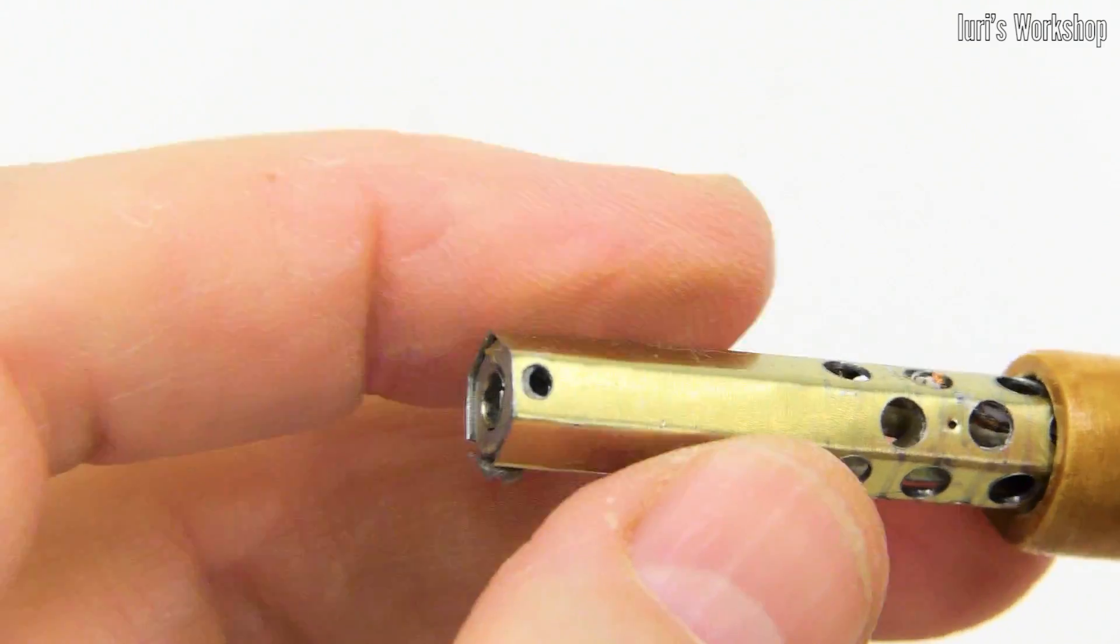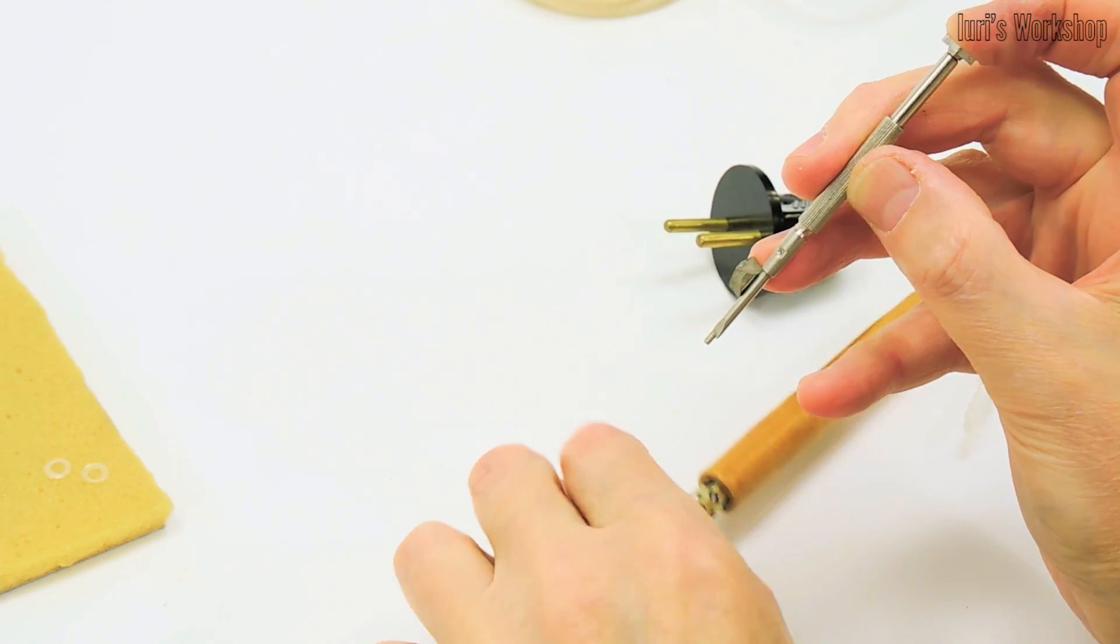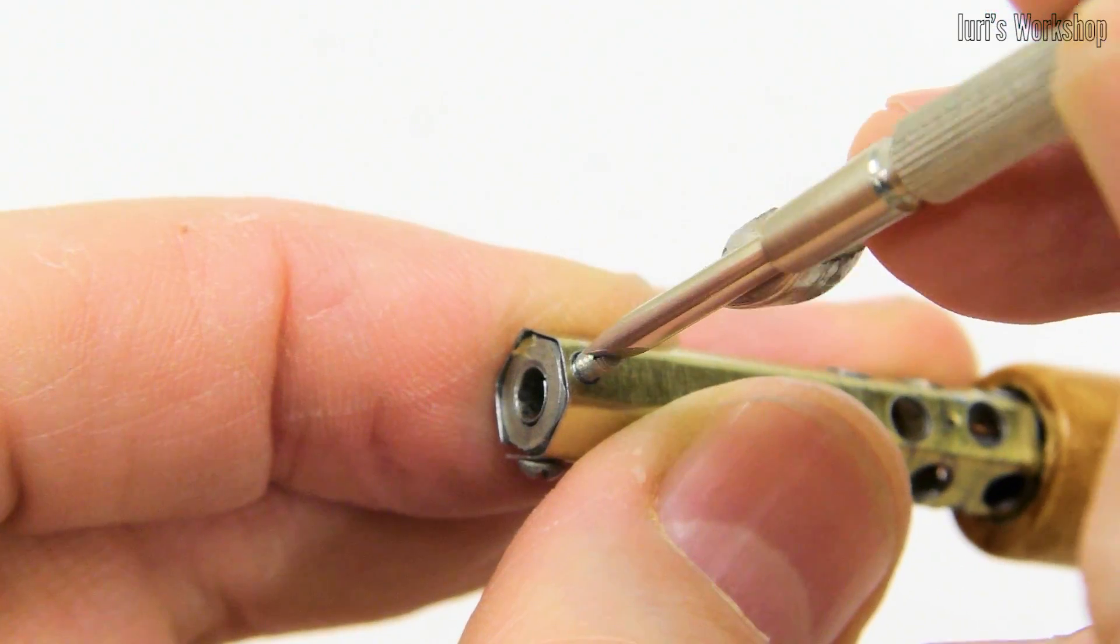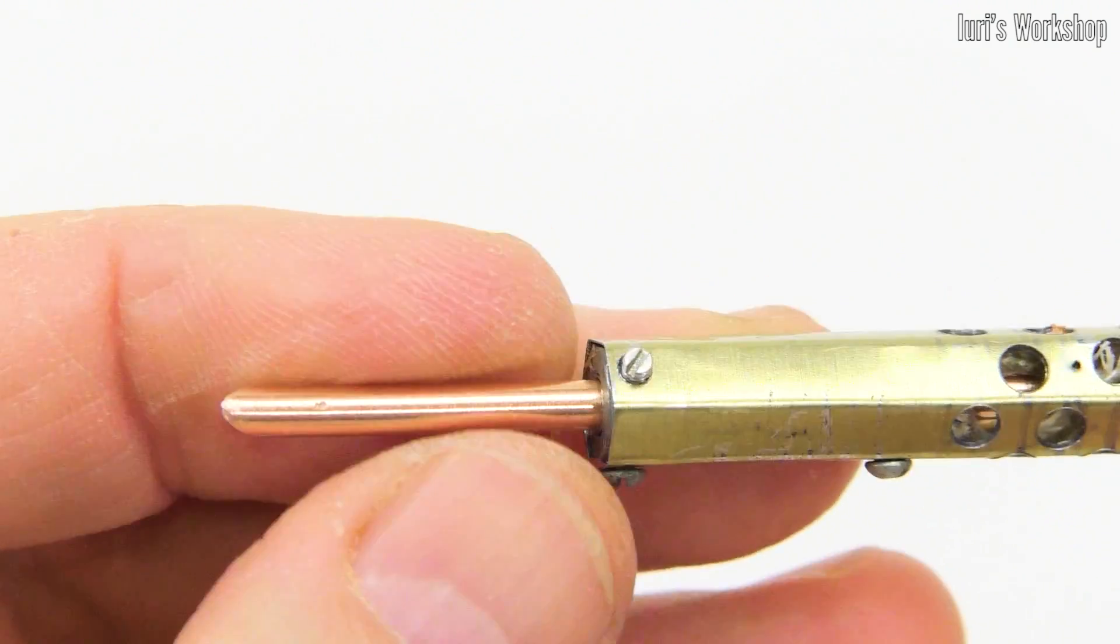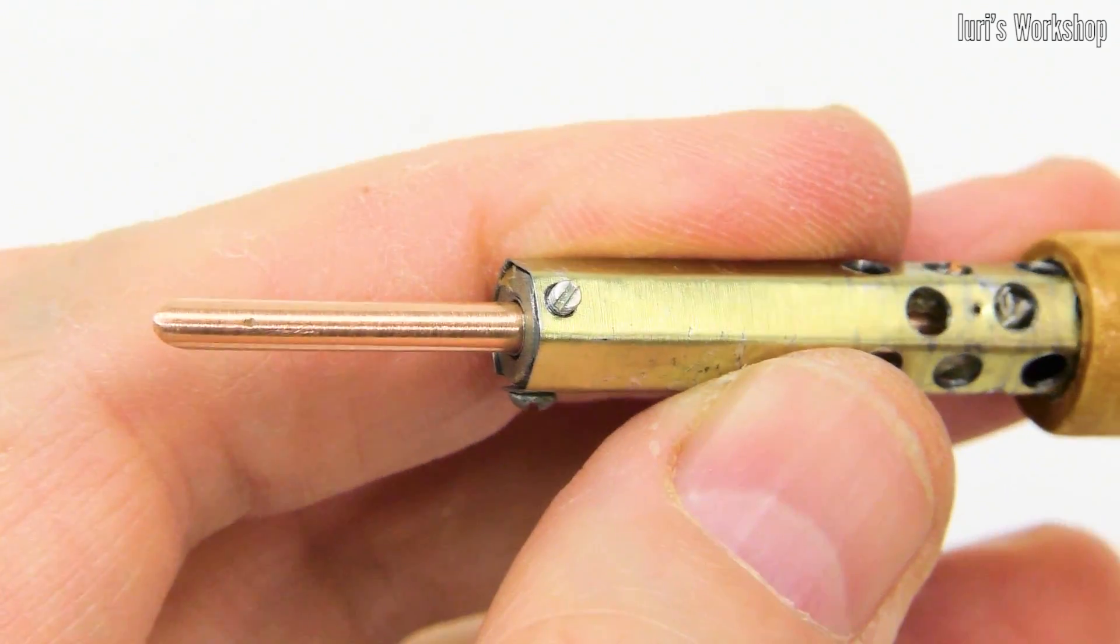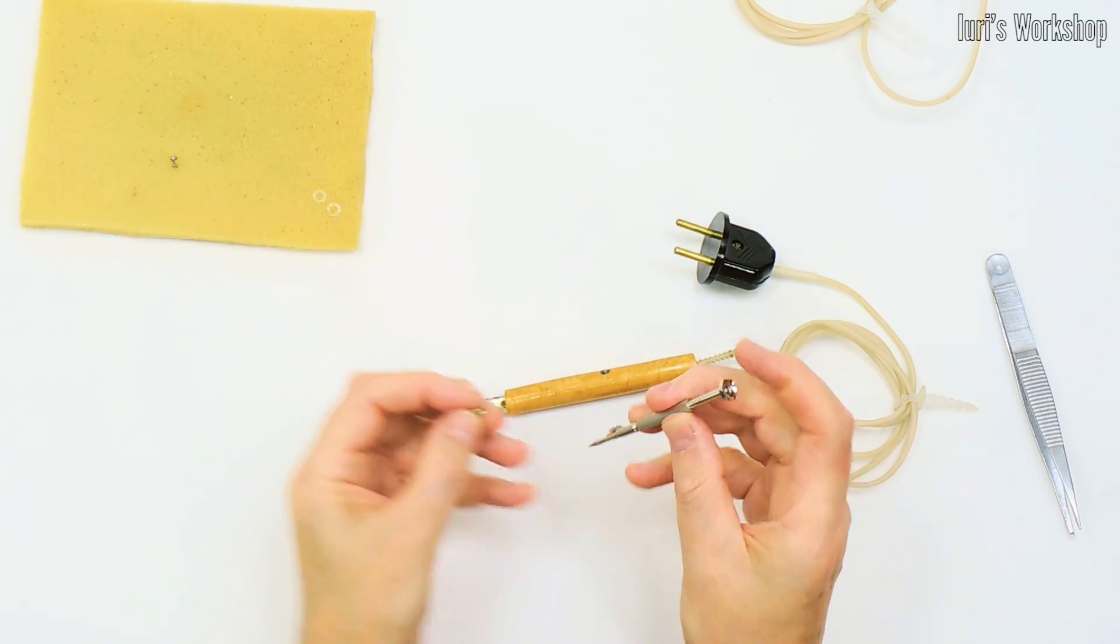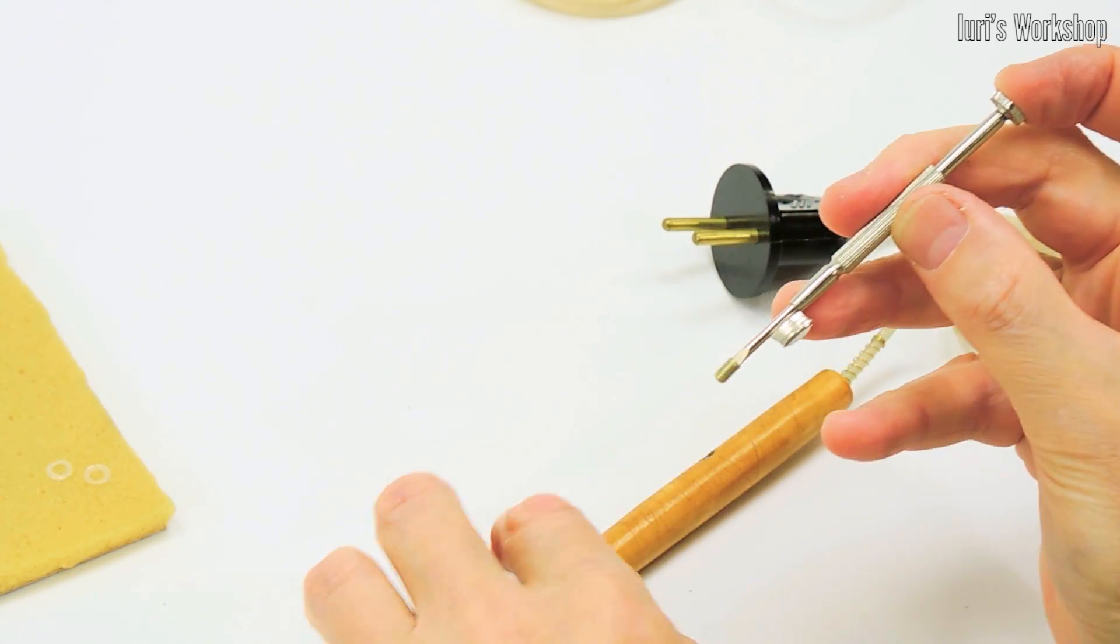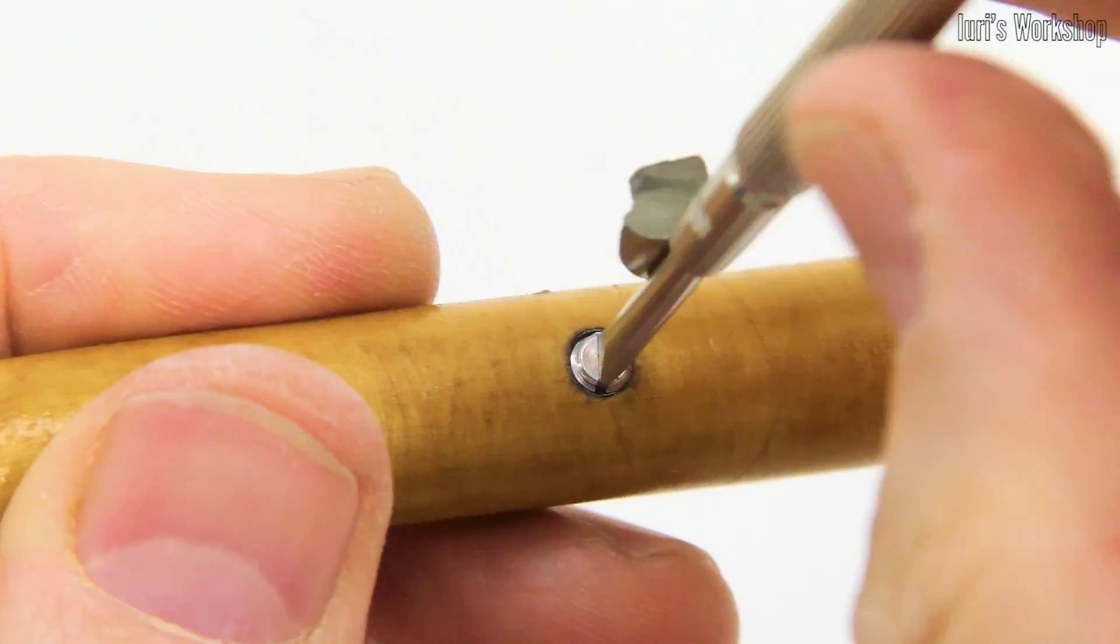The replaceable tip of a soldering iron with a diameter of 3 mm is secured with a locking screw. In order to prevent the tip from getting stuck in the heater body during the operation of the soldering iron, it should be periodically dismantled and freed from scale. Another set screw secures the power cable to the soldering iron handle.